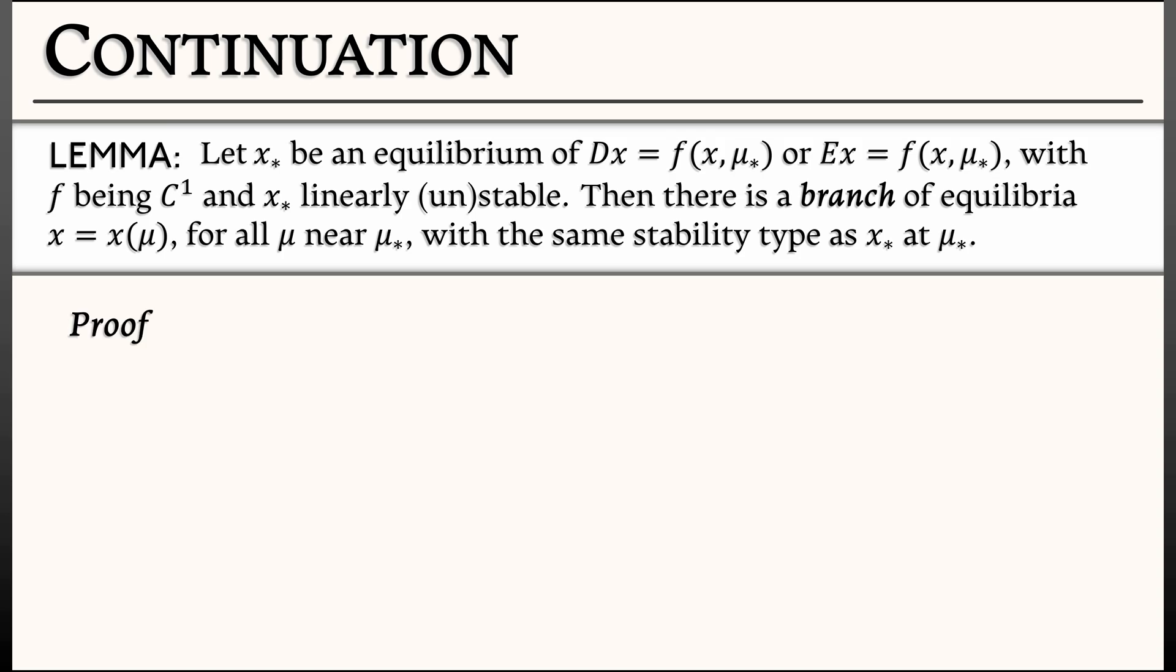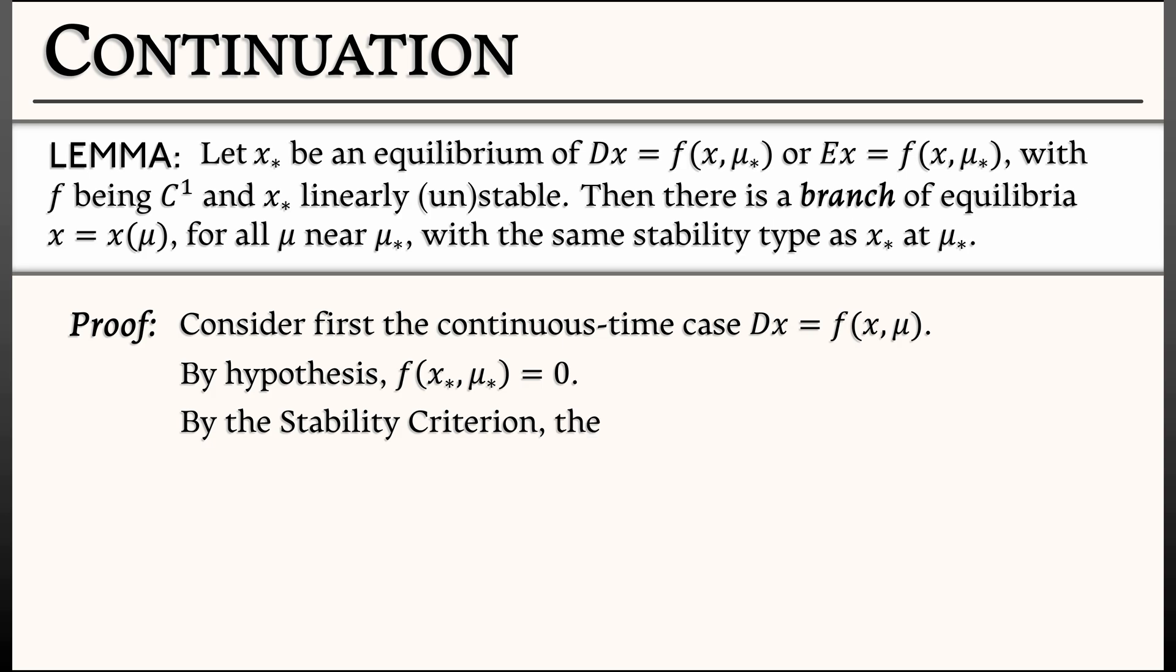How do we prove something like this? Seems like you might need some sort of big tool. Well, let's think. Consider first the continuous time case, dx = f(x, μ). By hypothesis, f vanishes at x* and μ*. That's where our initial equilibrium is. By the stability criterion, since this is linearly stable or unstable, the partial derivative ∂f/∂x exists and is non-zero at this equilibrium. It's either positive, in which case you have an unstable equilibrium, or negative, in which case you had a stable equilibrium.